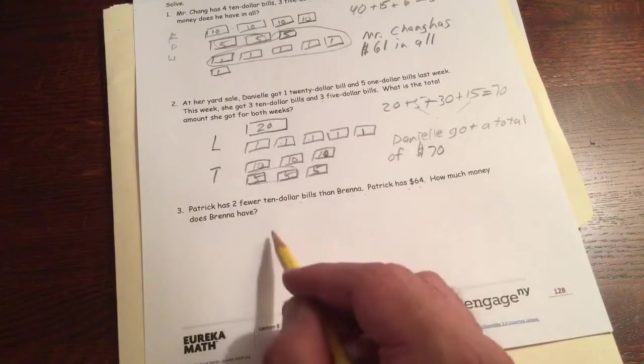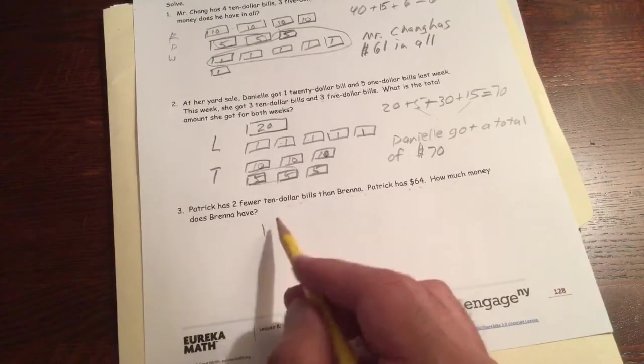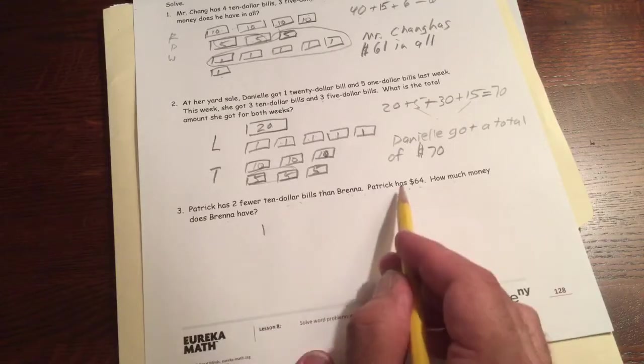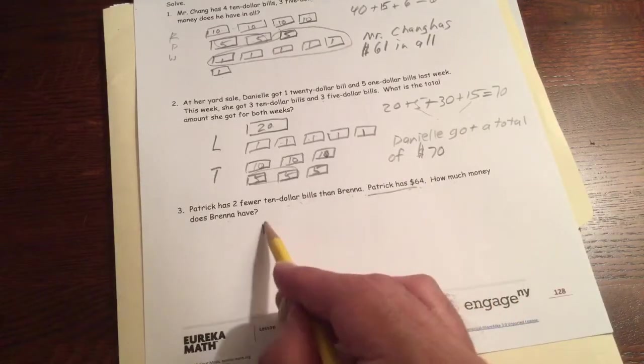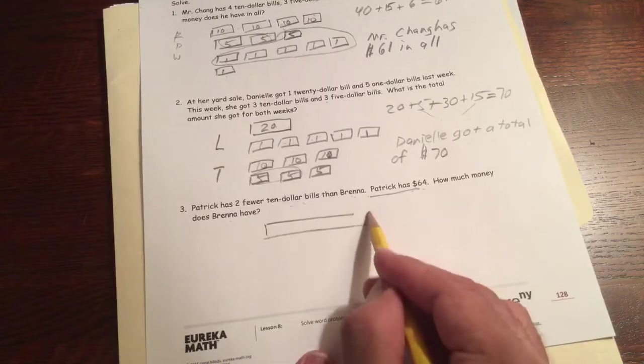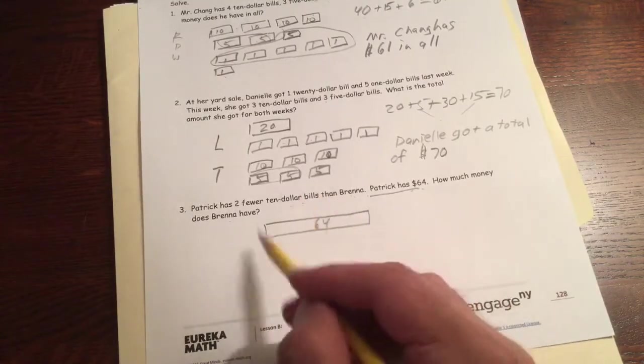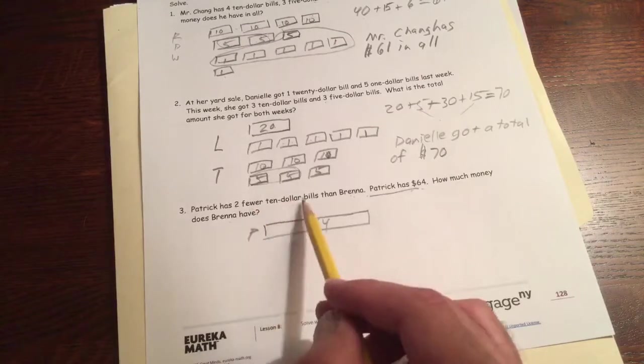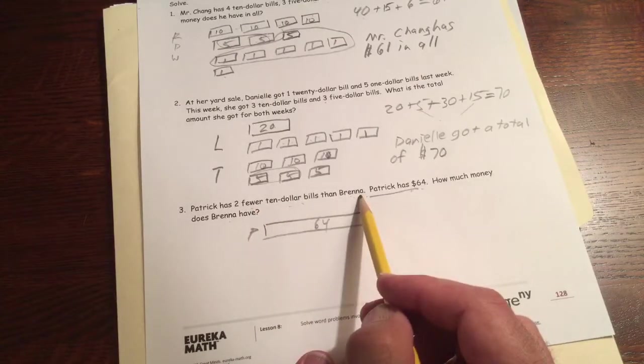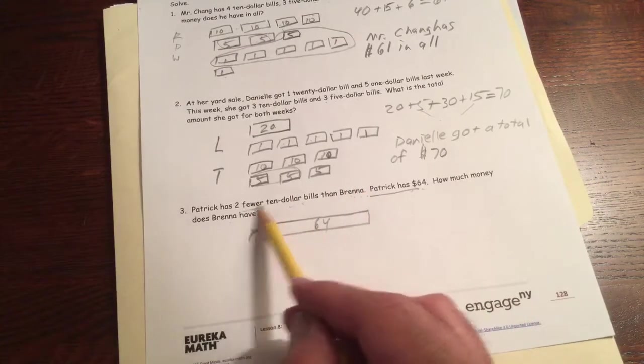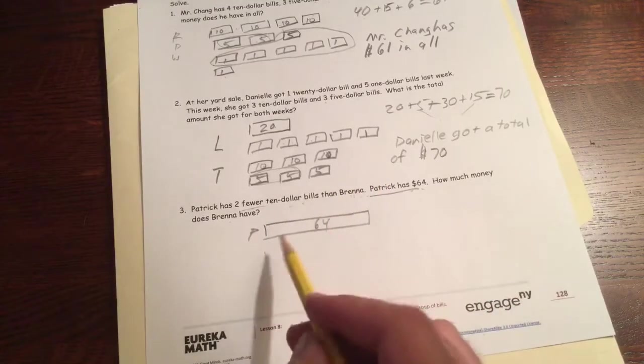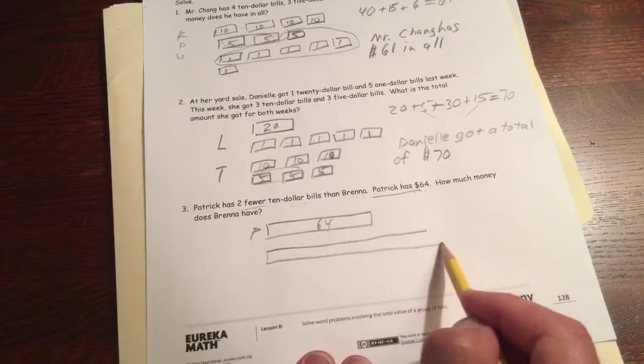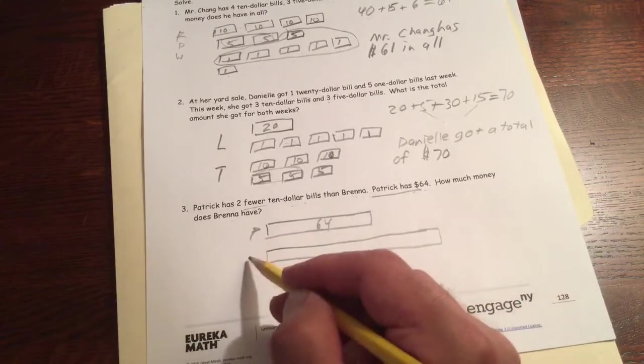Patrick has two fewer $10 bills than Brenna. We know Patrick has $64. How much money does Brenna have? So we could draw a tape diagram for this. Or we could draw a money picture. So let's see, Patrick has $64. We know Patrick has $64. $64, and that's Patrick.